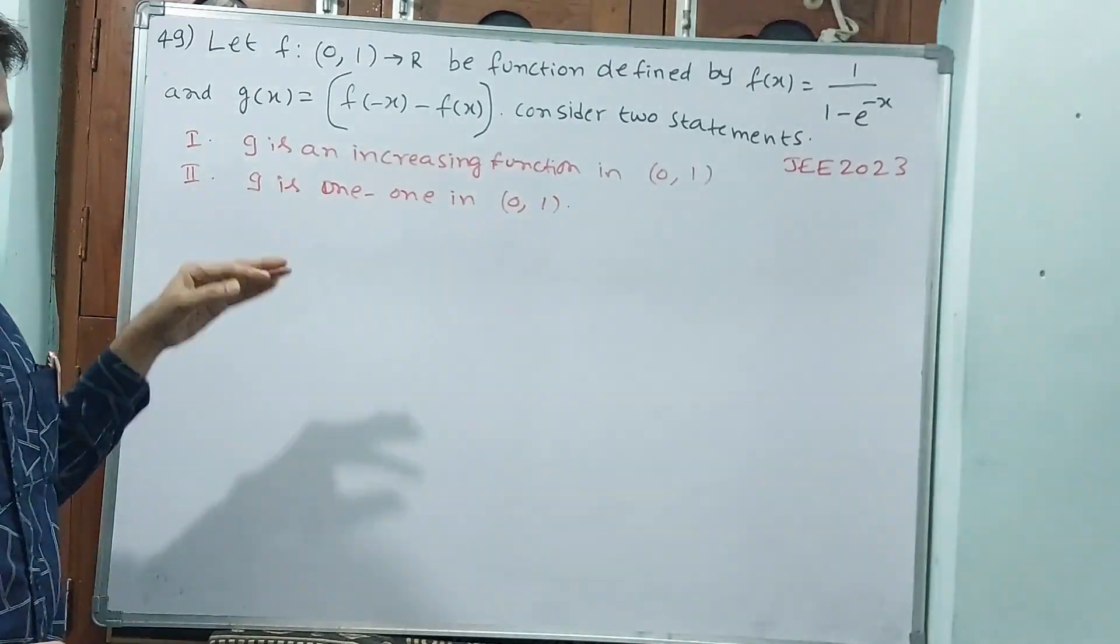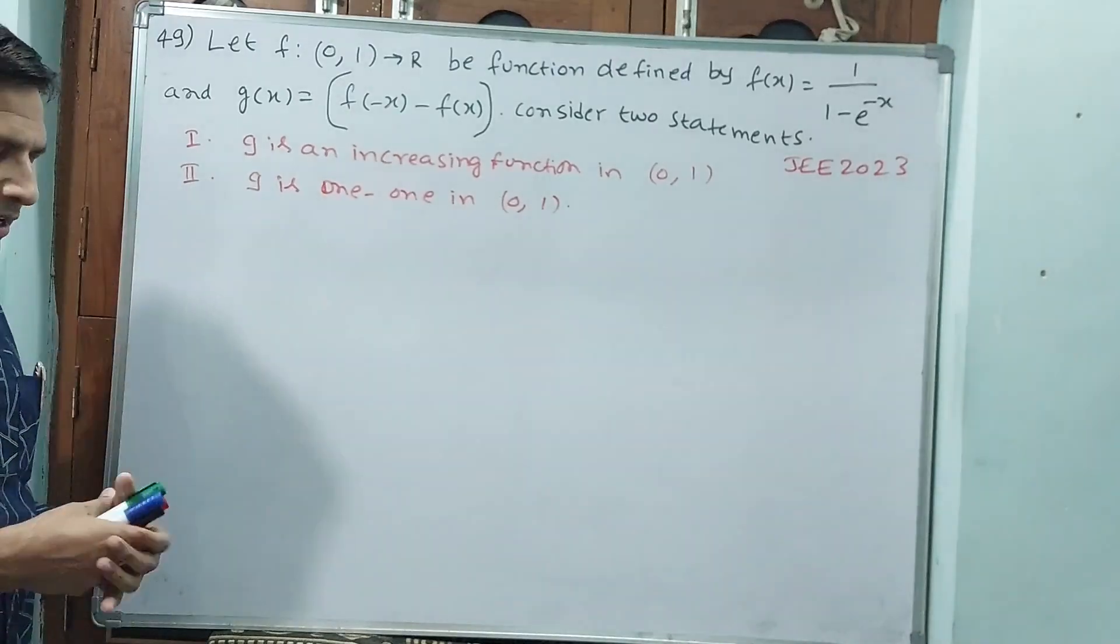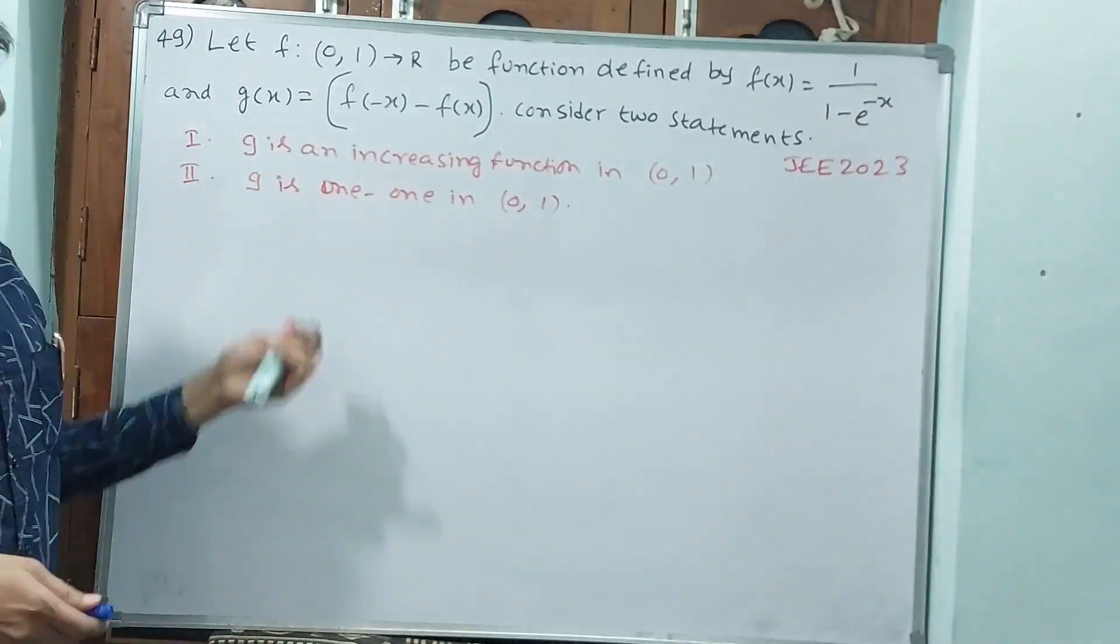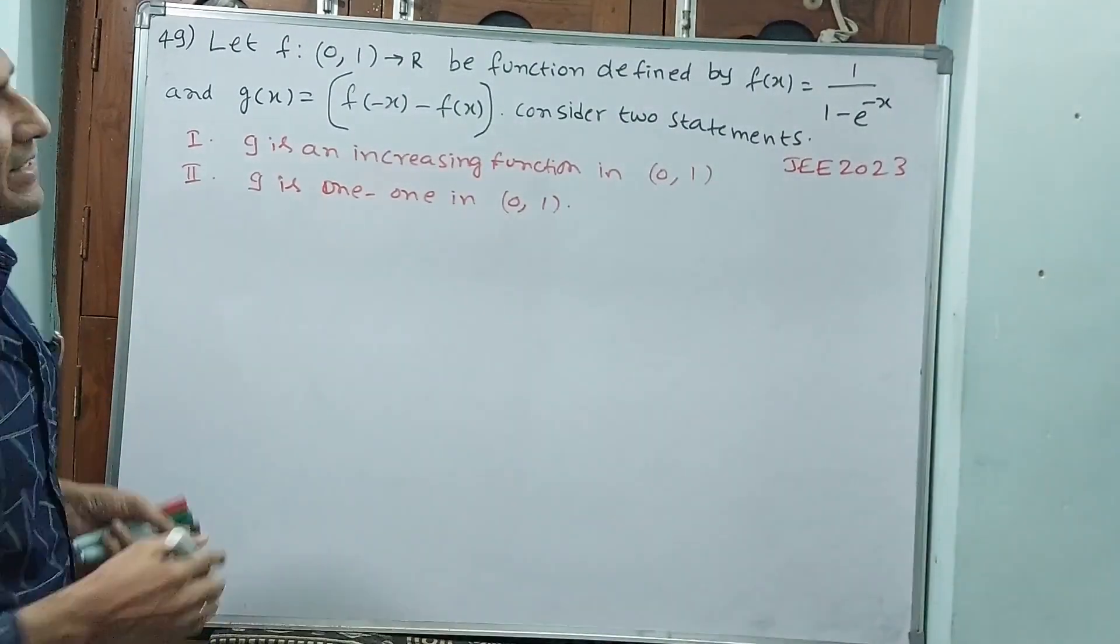So we have to see whether both statements are correct, only 1 is correct or 2 is correct, both are not correct. Four options are there, but the options are not written. Let us proceed. See, shall I rewrite that function?